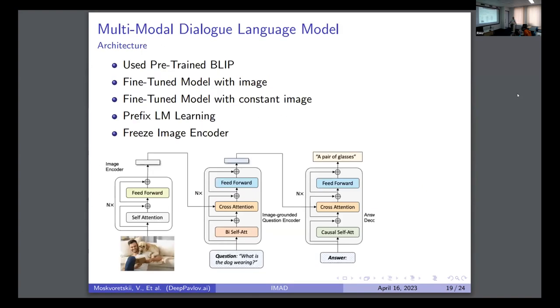So here we move to model training. We are using the BLIP model. The architecture is quite simple. We have an image encoder. It's cross-attentioned to the question encoder, and then it's cross-attentioned with the answer decoder. Then we have an answer to our question. So we used pre-trained BLIP. We fine-tuned the model with an image encoder. We fine-tuned the model with a constant image, and we also tried zero-shot BlenderBot. We are using prefix language model learning. We are freezing the image encoder, and we are training all the other encoder and decoder.